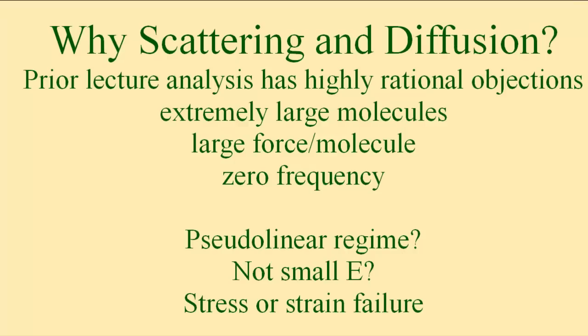How do we get around that? We go to systems which, in principle, have to be linear. We go to look at diffusing systems, and to look at diffusion, we have to start by talking about light scattering.